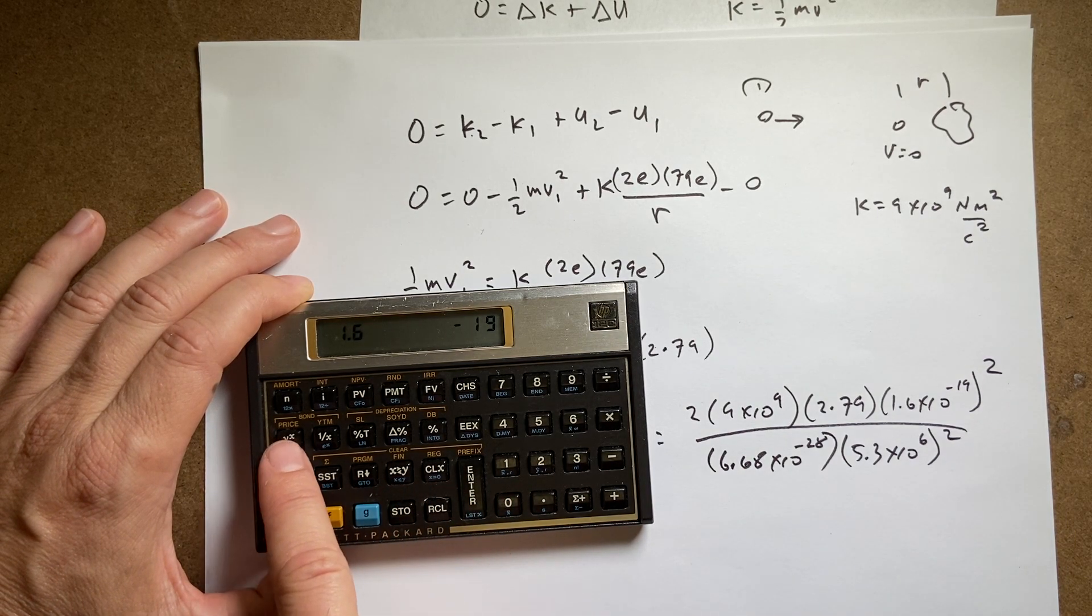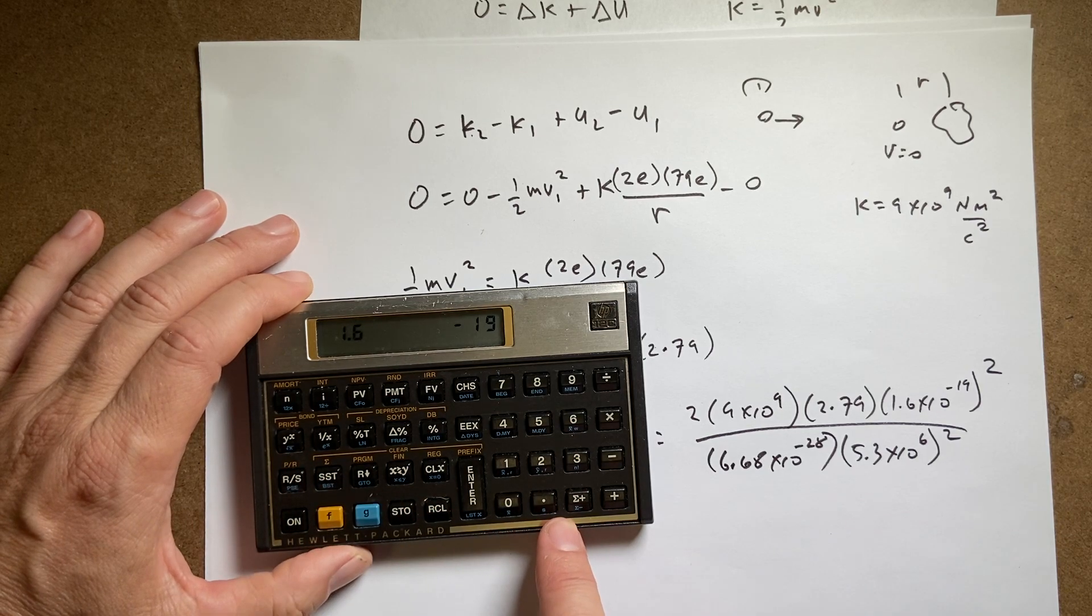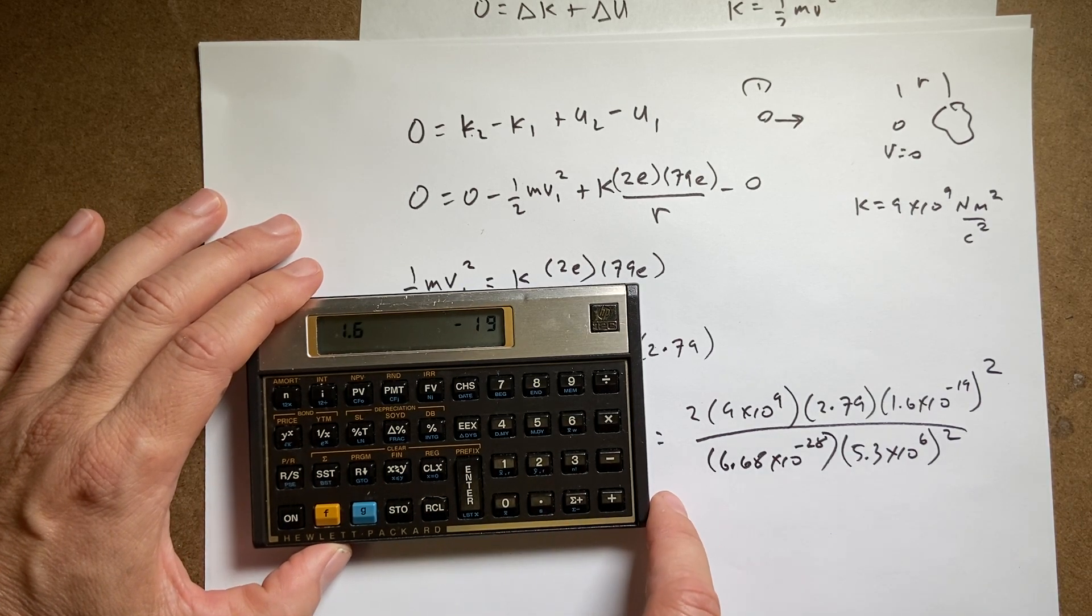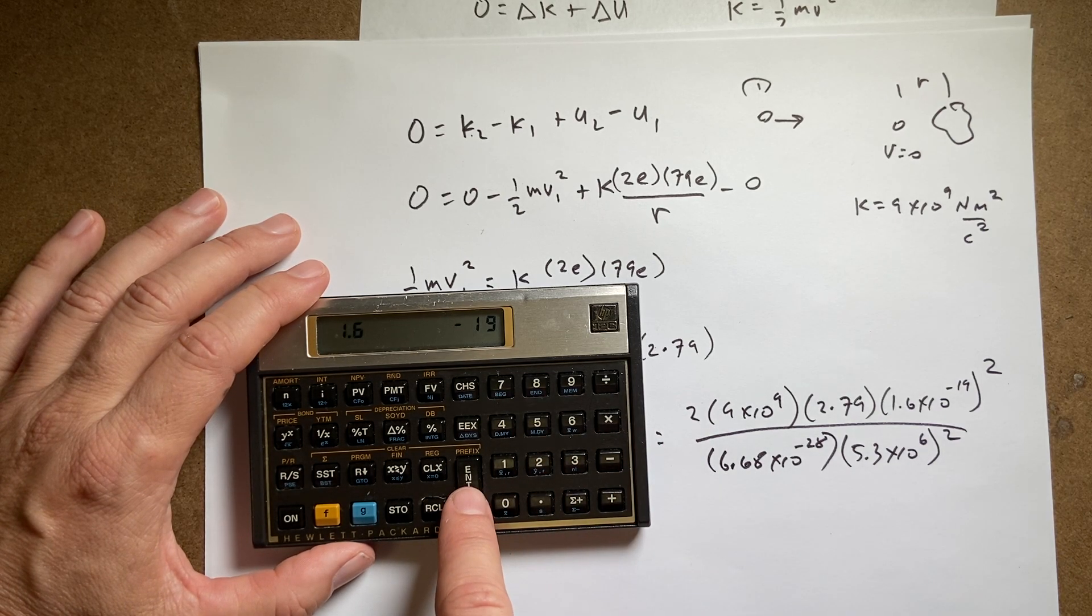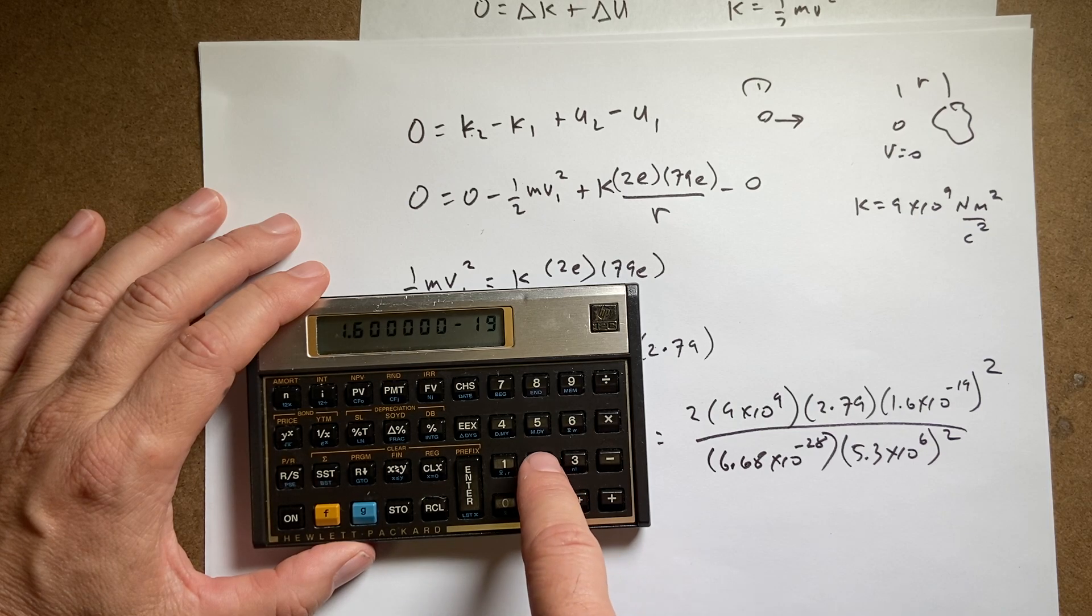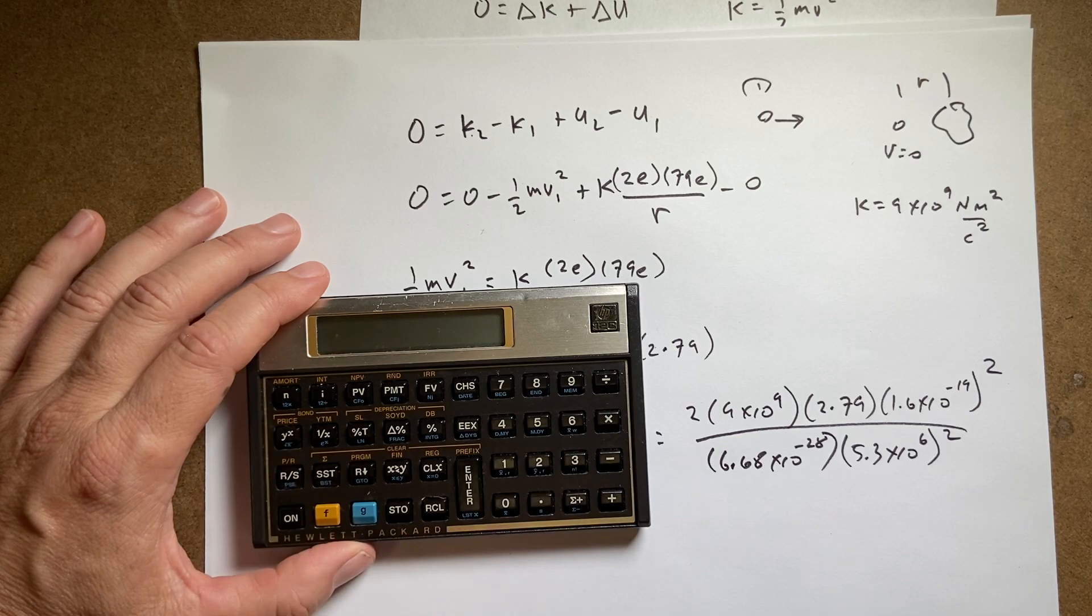I have y to the x. There should be a squared button. I haven't used this calculator in a really long time. Okay. Let's just do enter. Now I'm going to say 2. I think this is right. 2.